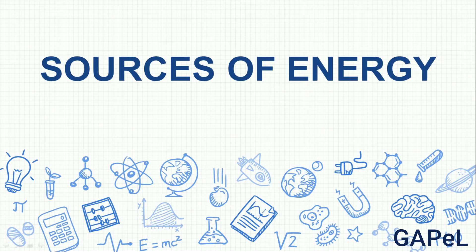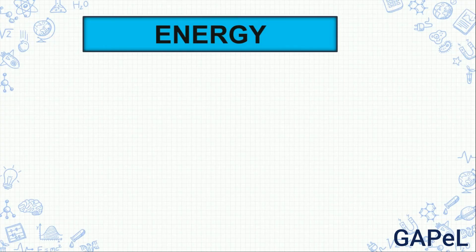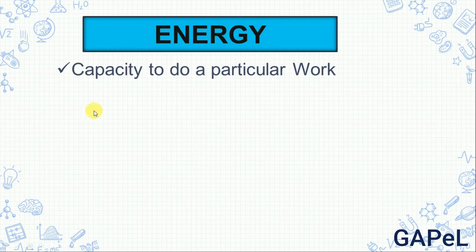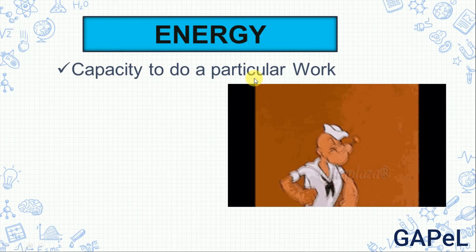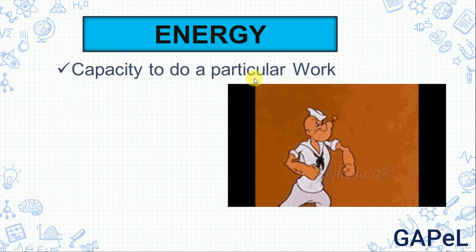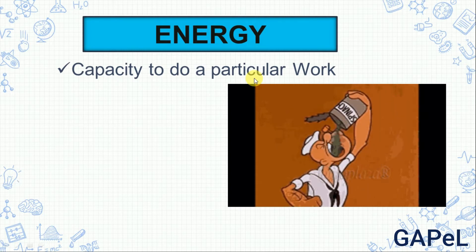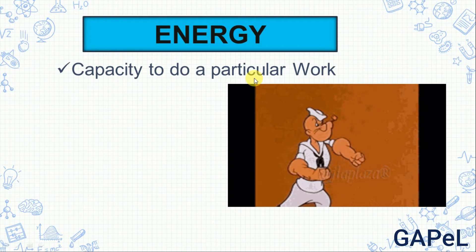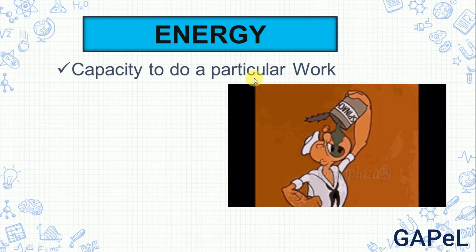Welcome to today's class. Chapter number 14: Sources of Energy. So what is energy? Energy is nothing but the capacity to do a particular work. For example, to dance, to run, to do any work, we need energy. The food we eat gives us energy to do all this work.